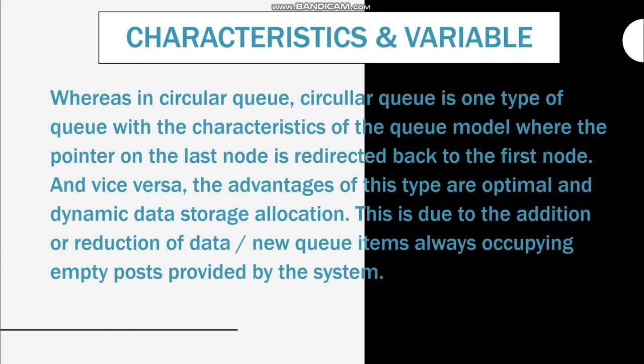The circular queue is a type of queue with the characteristic of a queuing model where the pointer on the last node is redirected back to the front node and vice versa. The advantage of this type is optimal and dynamic data storage location. This is because the addition or reduction of data — or new queue items — always occupies empty positions provided by the system.